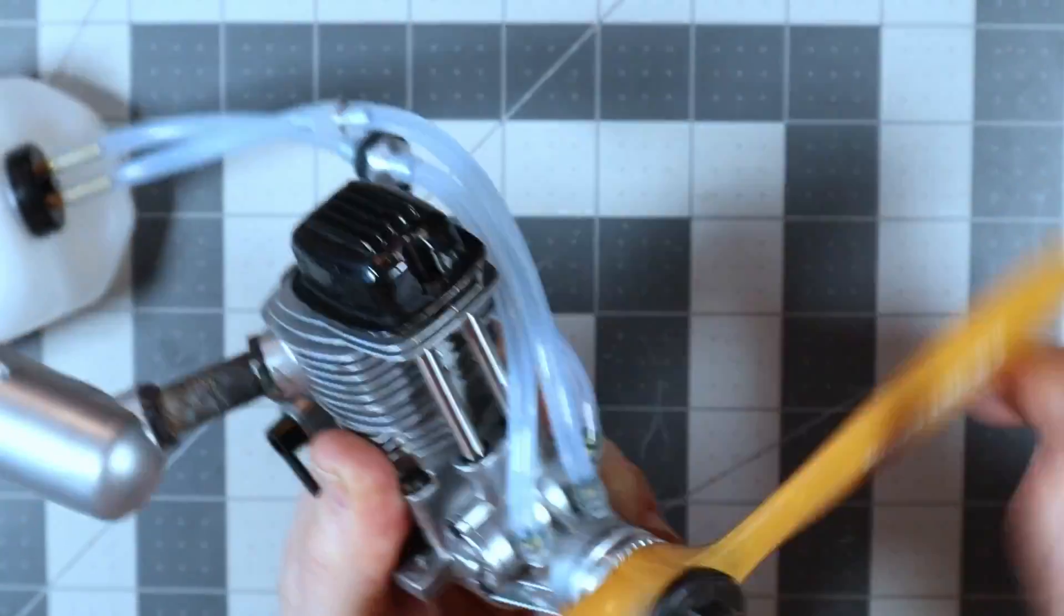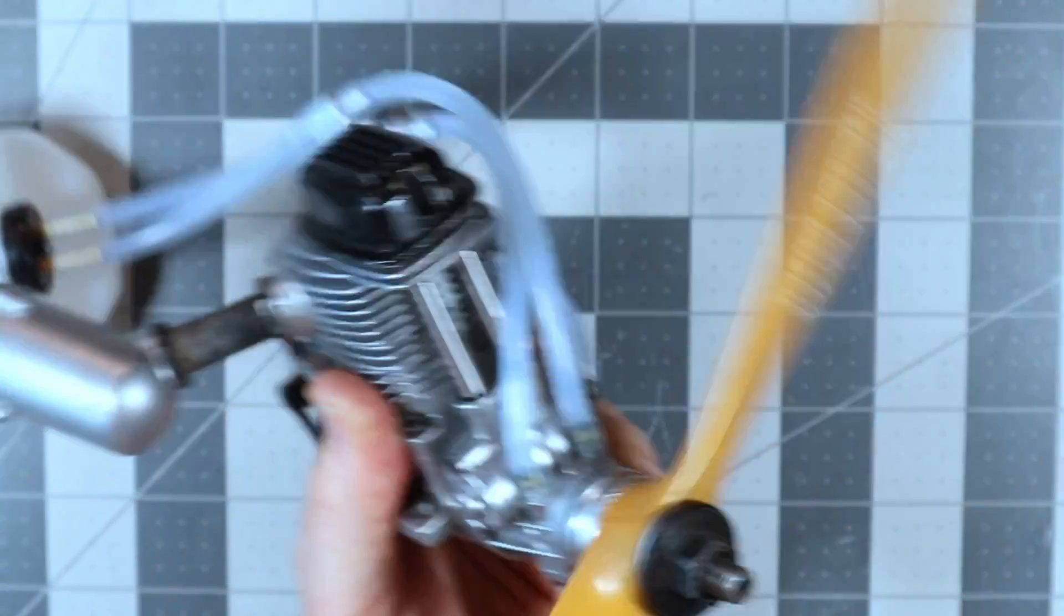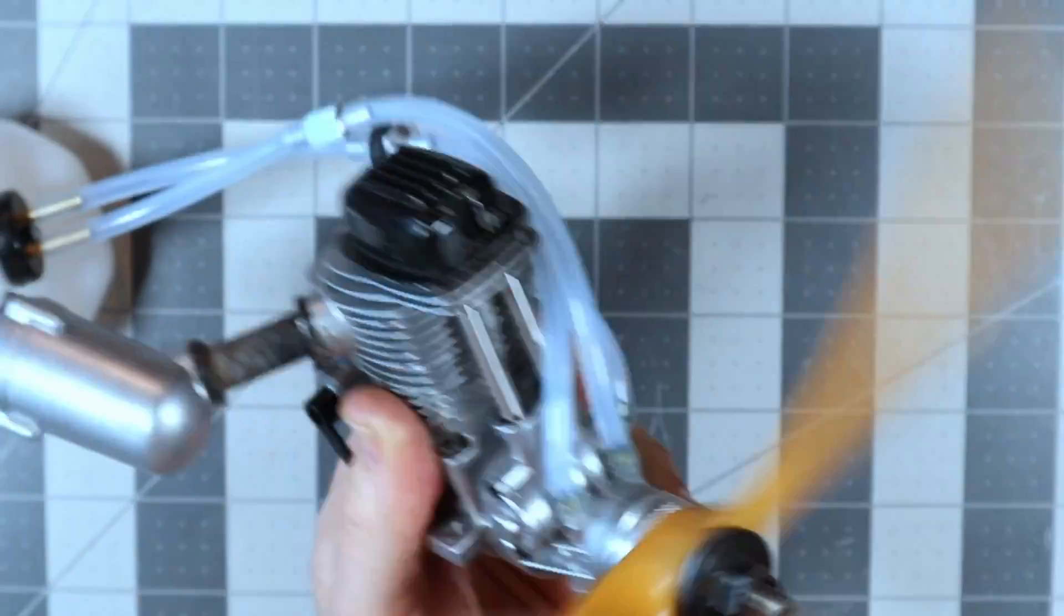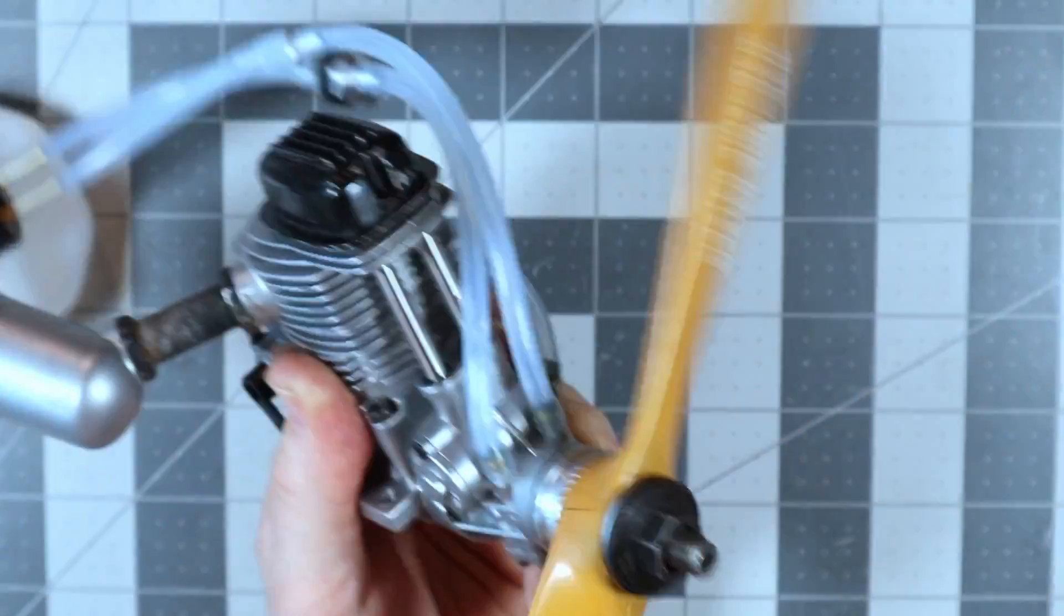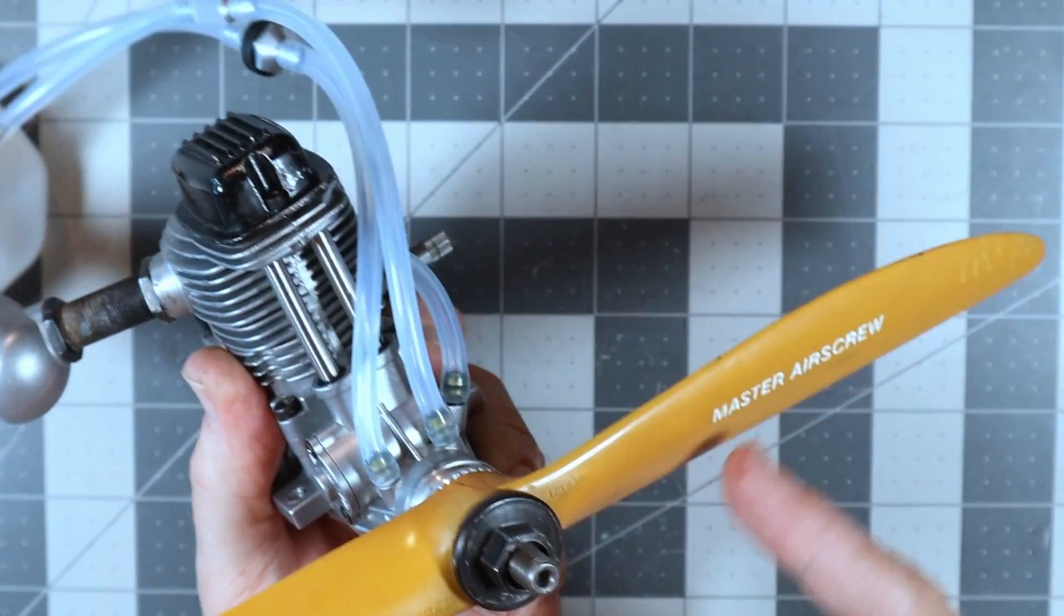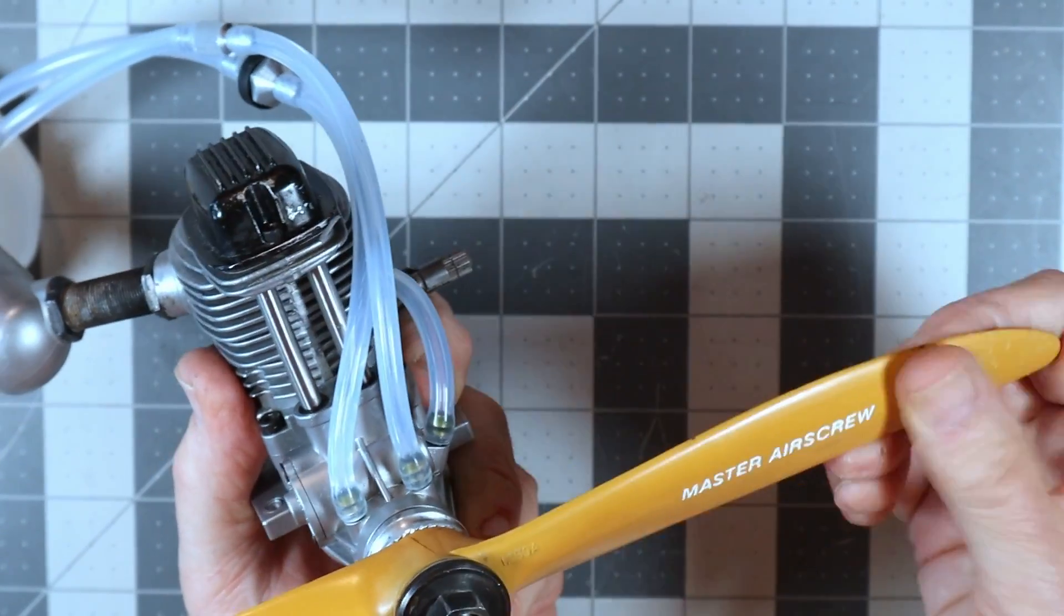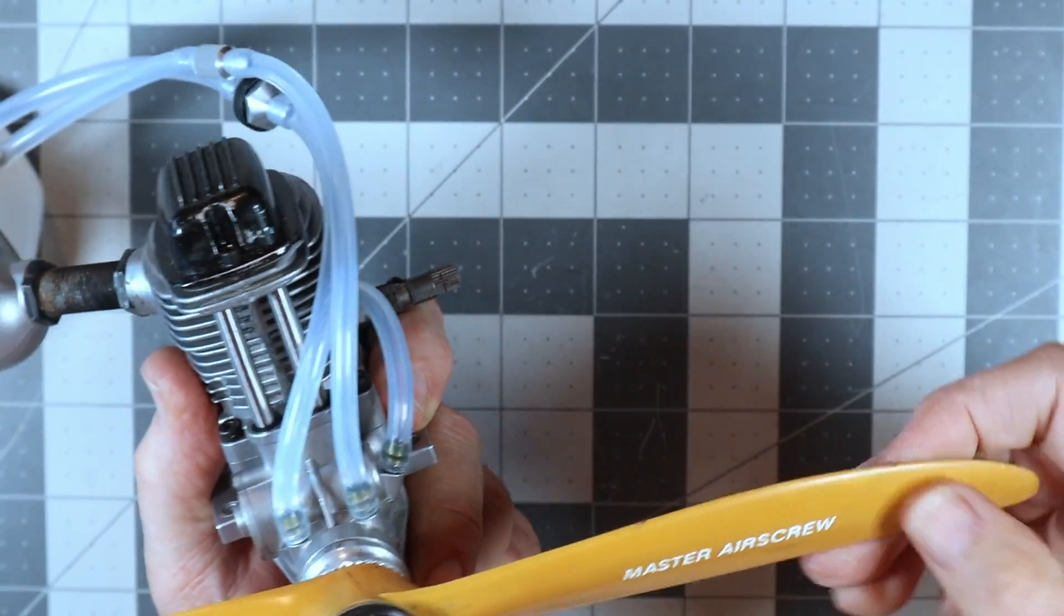I'm going to pressurize this again just to make sure that I didn't hose something up here. So much for this being a short video. Now this prop is the one that actually came on the engine. I've never seen or had one of these Master Air Screw props before. It's a strange color. I don't know if it's a vintage prop or what the deal is with this prop.